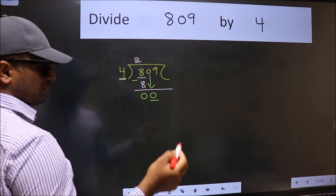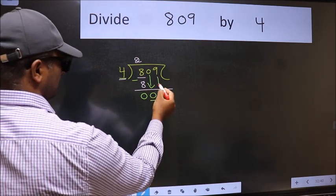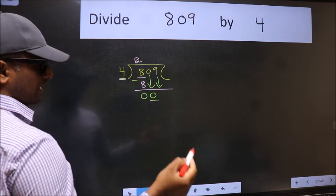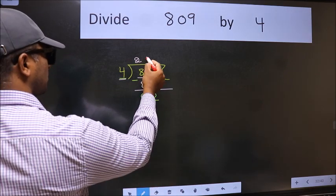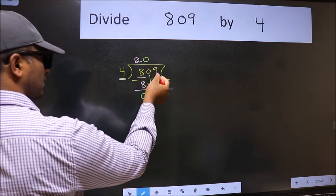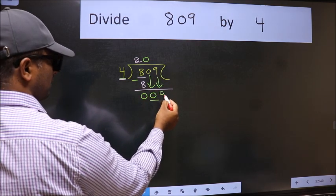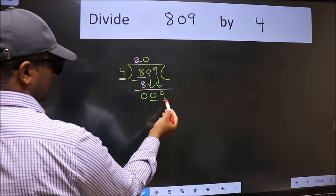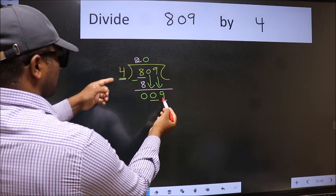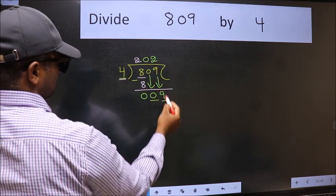So, we should bring down the second number. And the rule to bring down second number is we should put 0 here. Then only we can bring this number down. Now, 9. A number close to 9 in 4 table is 4 twos, 8.